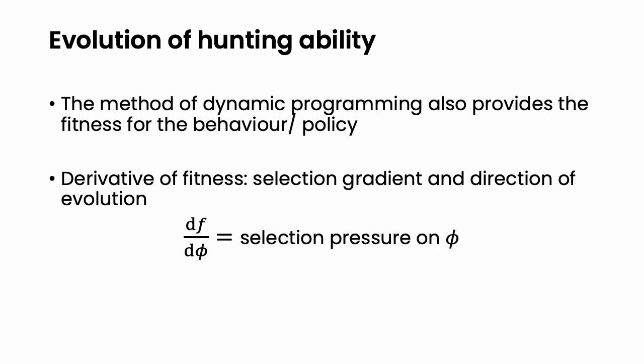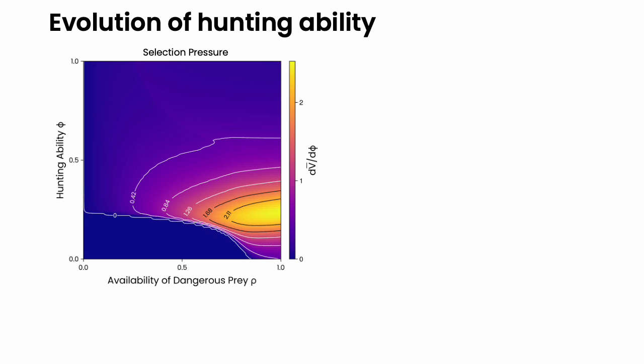That is, if we take the derivative of the fitness with respect to the hunting ability, it then gives us the selection pressure on the hunting ability. This plot shows the selection pressure on the hunting ability for the same parameter values as before.